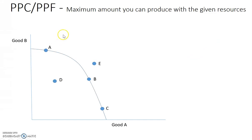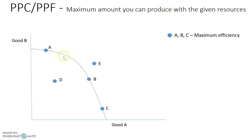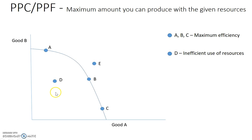We've got different points that are either on the curve, inside, or outside. Points A, B, and C align with the definition — maximum efficiency, producing at maximum capability based on the resources you have. This represents a country being as efficient as possible. Point D, on the other hand, is an inefficient use of resources. Maybe people are unemployed, or the economy isn't utilizing all its resources. Times could be bad — a recession or depression — and that could also cause us to be at point D.